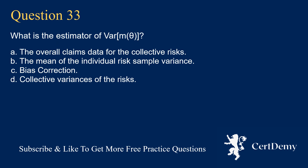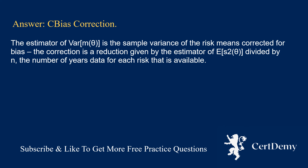Question 33. What is the estimator of Var(M(Theta))? Options: the overall claims data for collective risks; the mean of individual risk sample variance; bias correction; collective variances of the risks. The answer is: bias correction. The estimator of Var(M(Theta)) is the sample variance of the risk means corrected for bias. The correction is a reduction given by the estimator of E(S²(Theta)) divided by N, the number of years of data available for each risk.